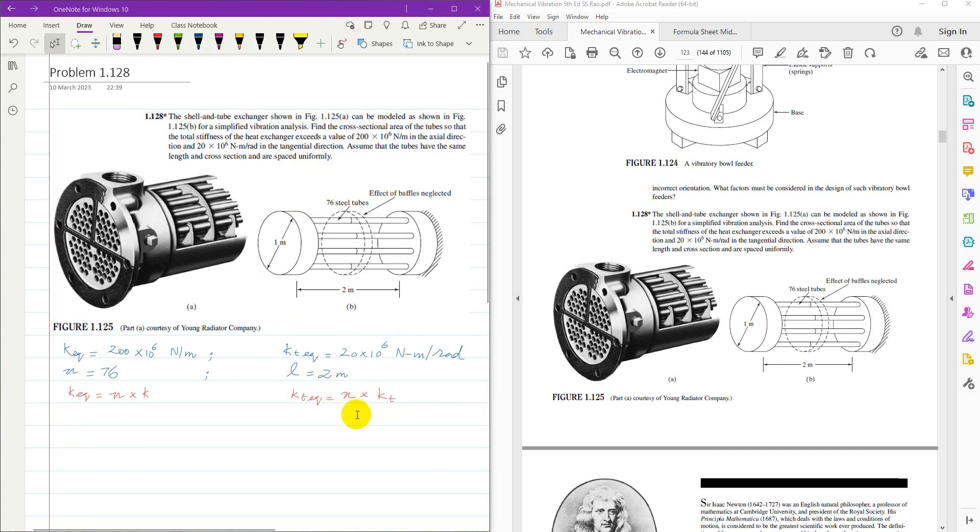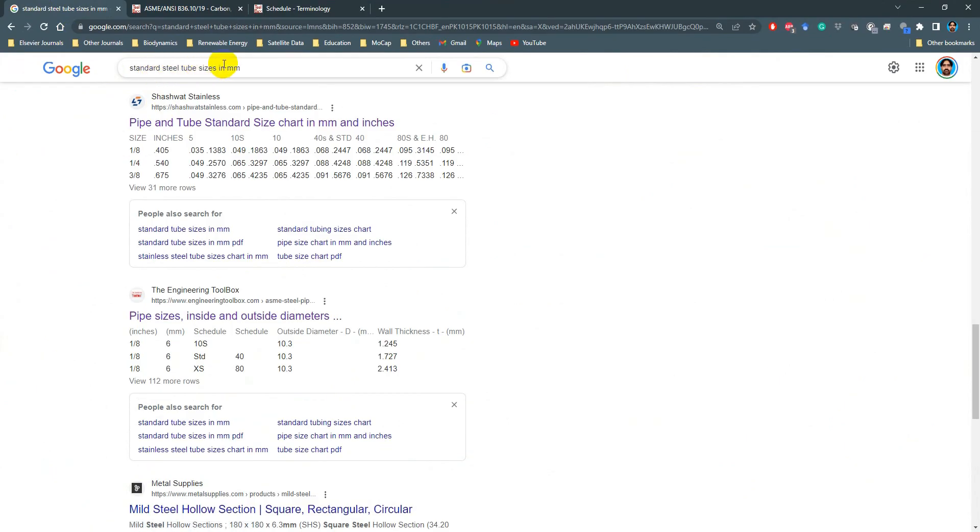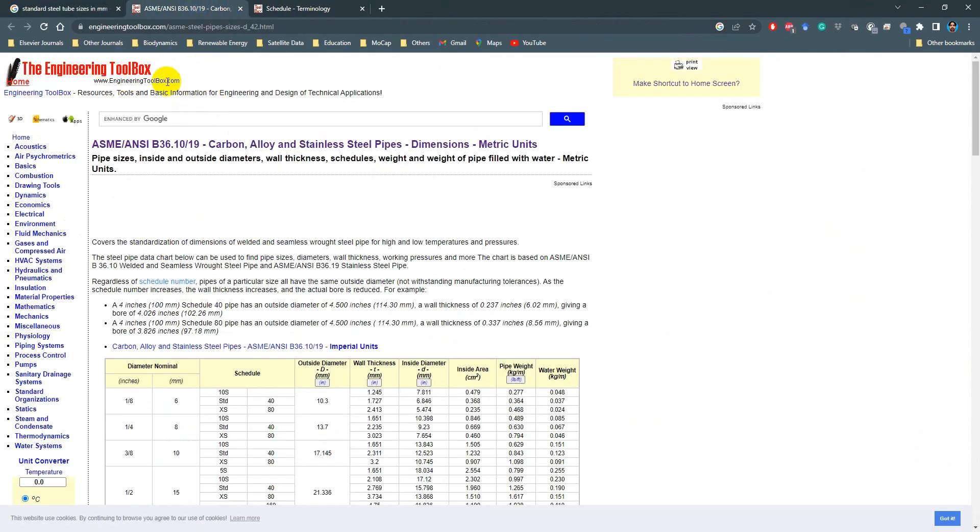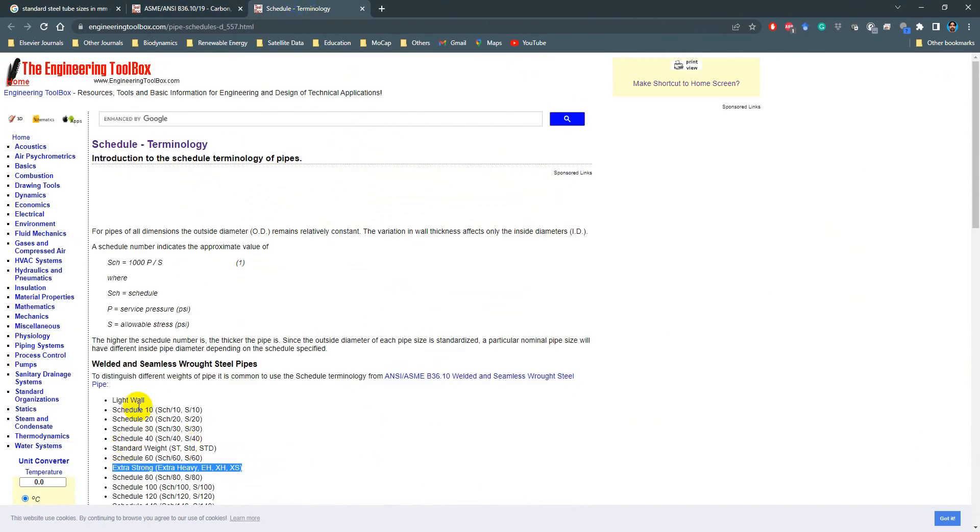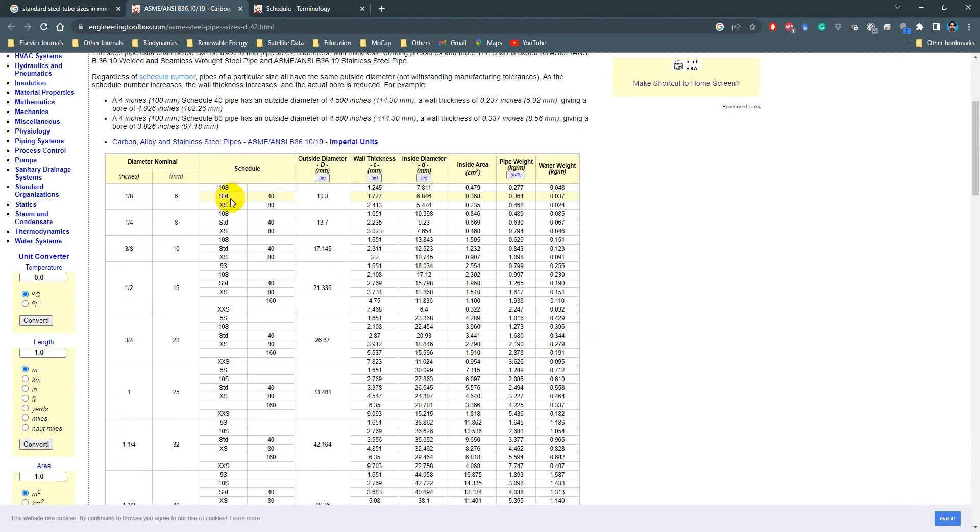To start with this problem, we need to first estimate a relationship between outside diameter and thickness of the tube. On internet you can search for standard steel tube size in millimeter, and you'll find them in an engineering toolbox. In engineering toolbox you have different schedule tabs, standard and extra strong. So let's say for the standard steel tubes,